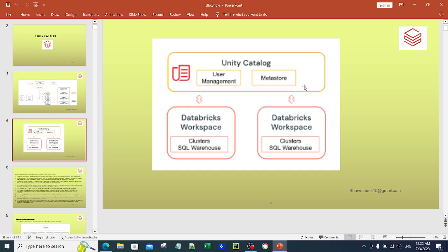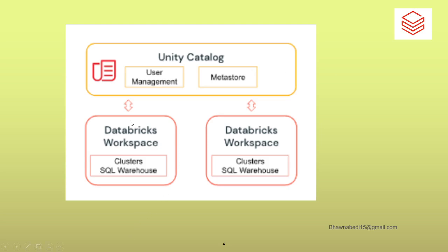Unity Catalog can link to multiple Databricks workspaces. When you talk about Unity Catalog, you have a metastore and user management. The metastore is a place where you can store your objects, your schemas, and the information about your objects — similar to your Hive Metastore. You have to create that metastore manually for Unity Catalog to work. Because of this metastore, Unity Catalog basically has a centralized metadata layer that can be shared across multiple workspaces.